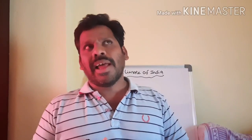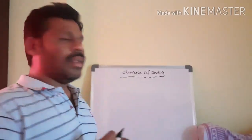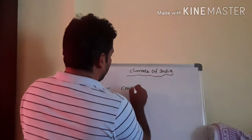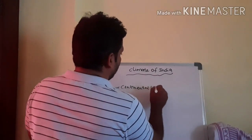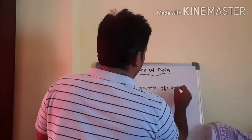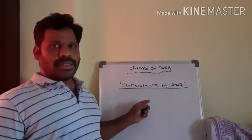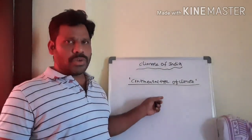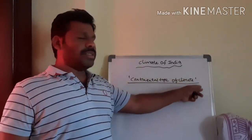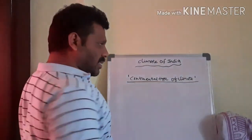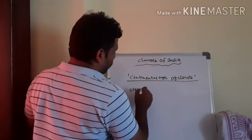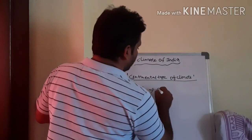For example, we will take two places: Chennai and Delhi. Delhi is called a continental type of climate because it is very far from the sea coast area. It is not bounded by the Arabian Sea or the Bay of Bengal. Chennai, on the other hand, is a sea coast area.